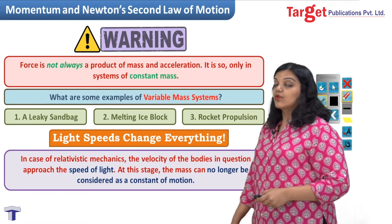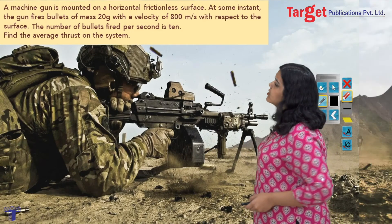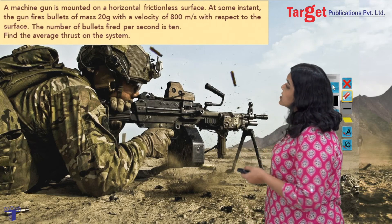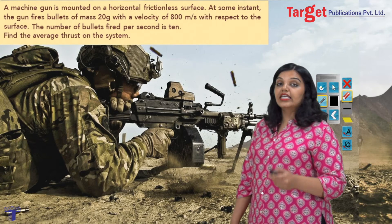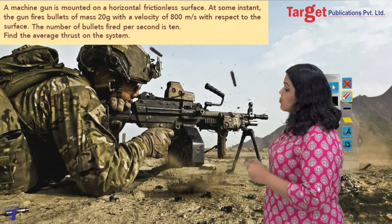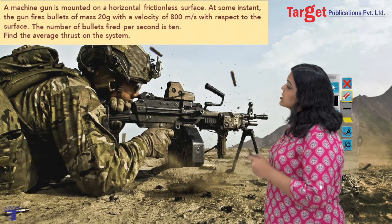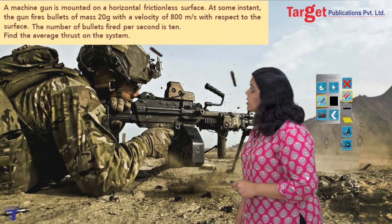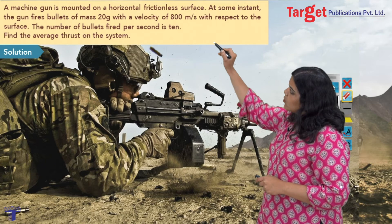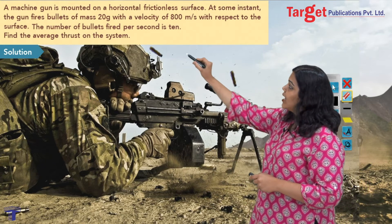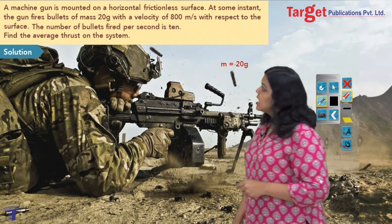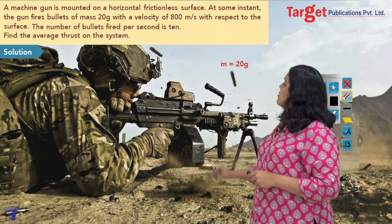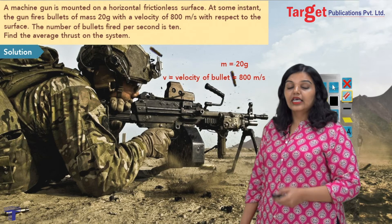Now let's apply this to a problem. A machine gun is mounted on a horizontal frictionless surface. At some instant, the gun fires bullets of mass 20 grams with a velocity of 800 m/s with respect to the car. The number of bullets fired per second is 10. We need to find the average thrust on the system. Given: mass of each bullet m = 20 g, velocity of each bullet v = 800 m/s.